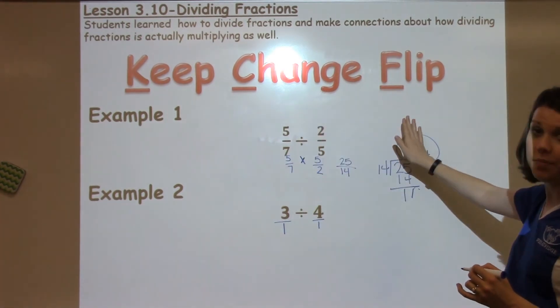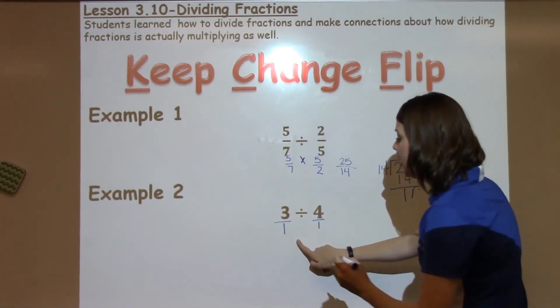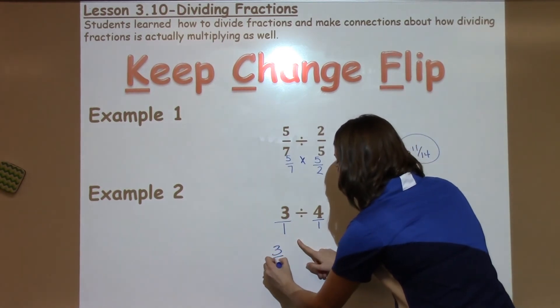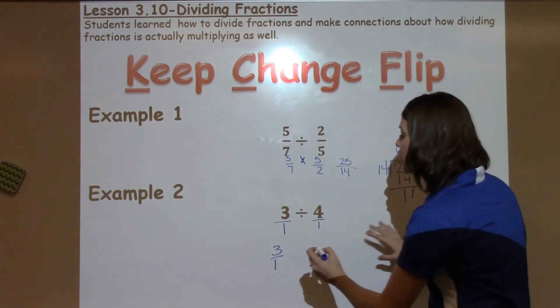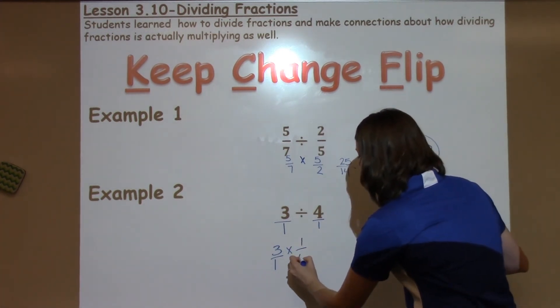Now we're going to do keep, change, flip again. So I'm going to keep, change, flip. I'm going to keep, so I'm going to write 3 over 1. Change my division to multiplication. And now I'm going to flip, or do the reciprocal, which is one-fourth.